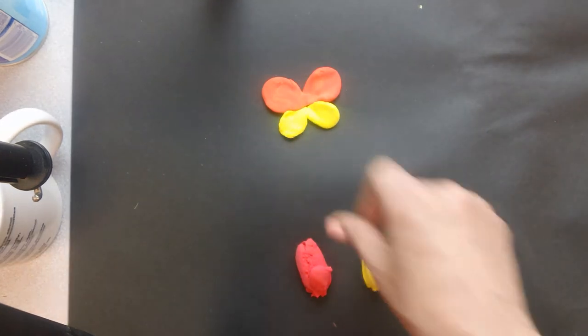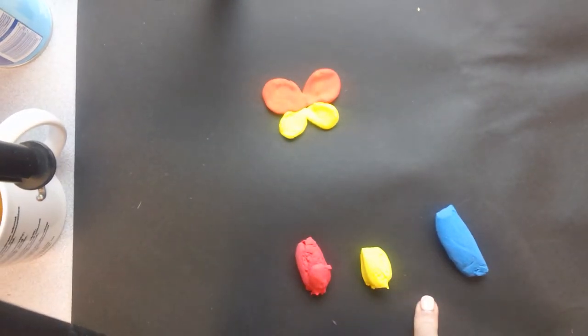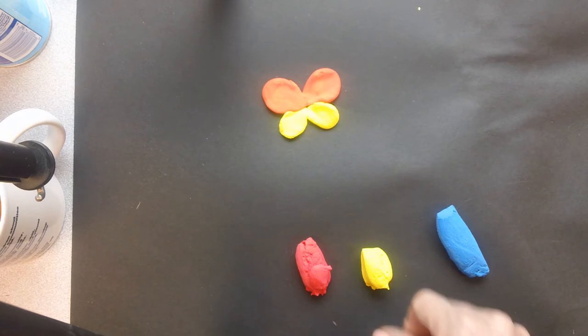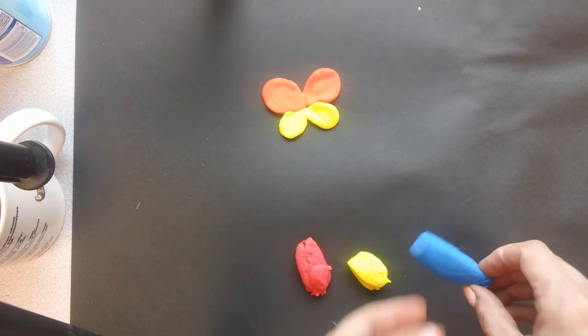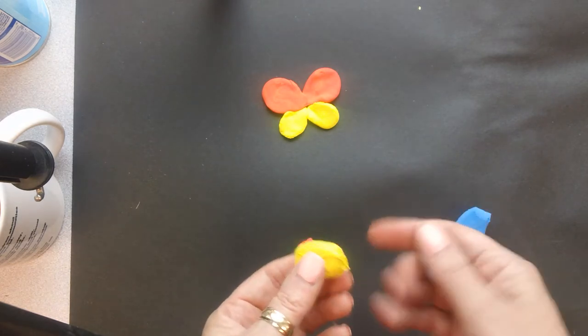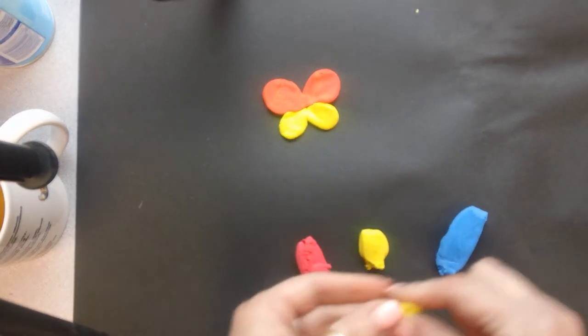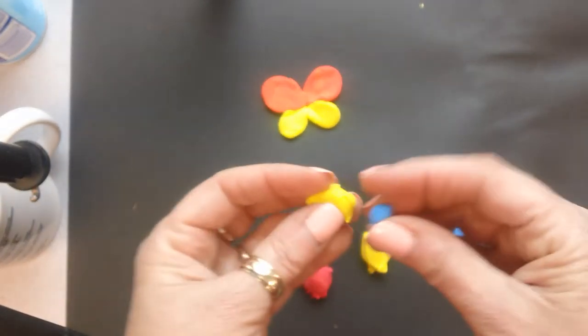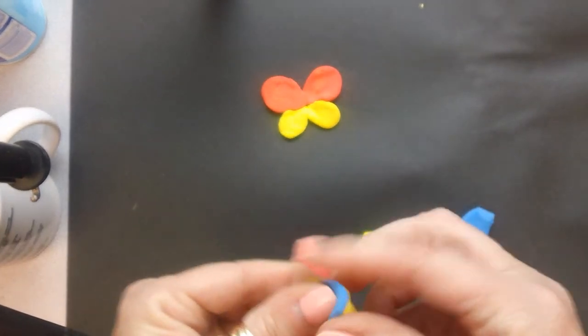And I'm going to make the body of my ladybug, my butterfly. So I'm going to have a green body. So I'm going to take some blue and some yellow. And notice I'm not using all of my primary colors. And I'm going to mix it together.